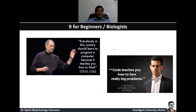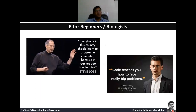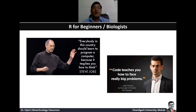So first, why do we need to do programming? I'm sure you know Steve Jobs, and this is Jack Dorsey, co-founder of Twitter. Both of them emphasize the importance of programming. Everybody in this country should learn to program a computer because it teaches you how to think. All programming is about how you translate what you want to do into a language the computer can understand.